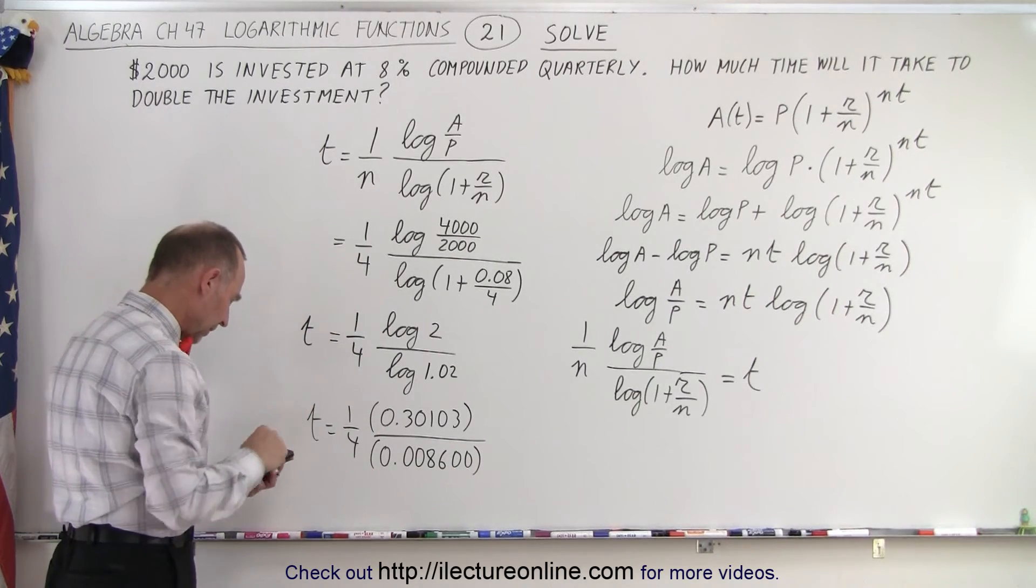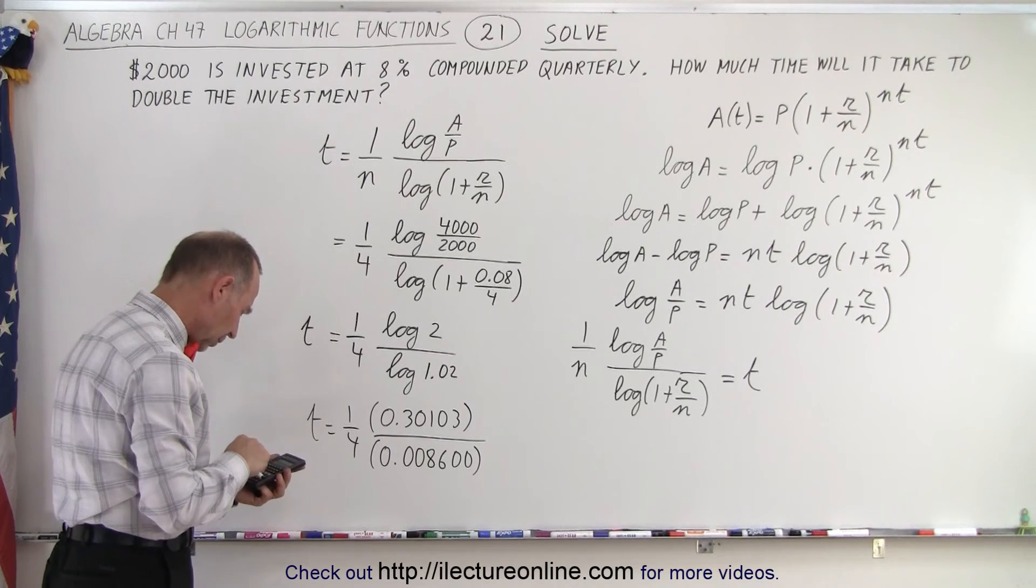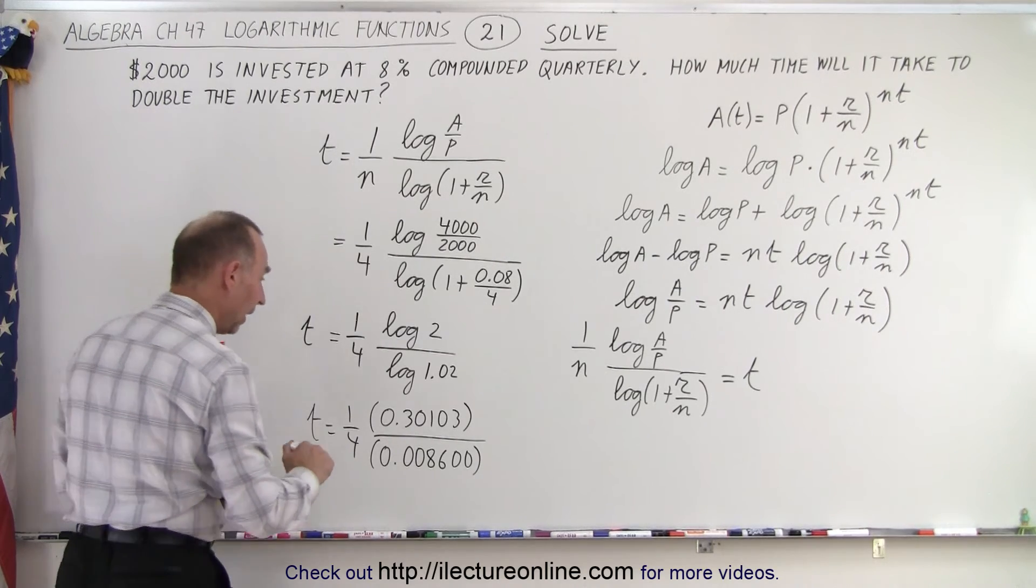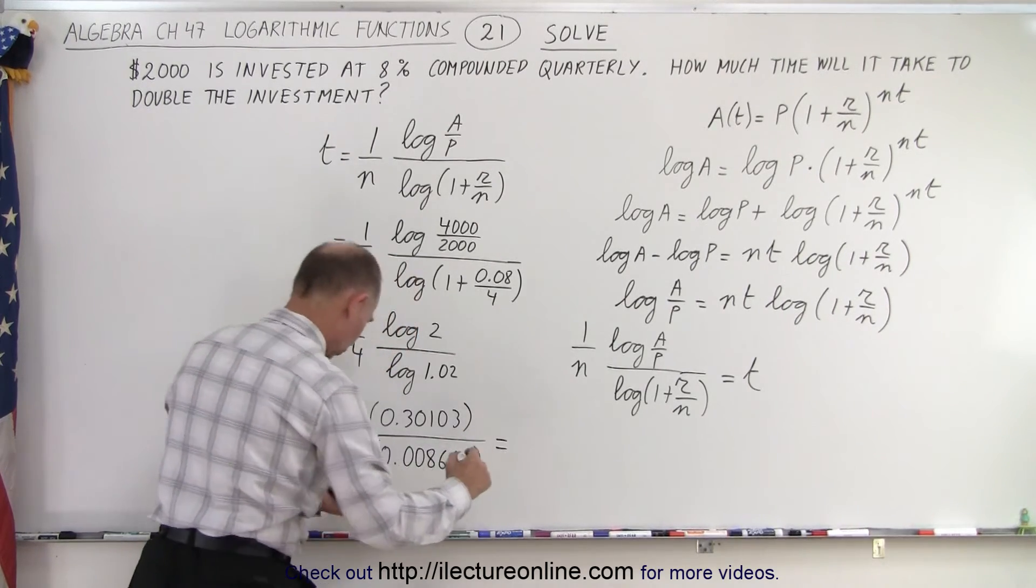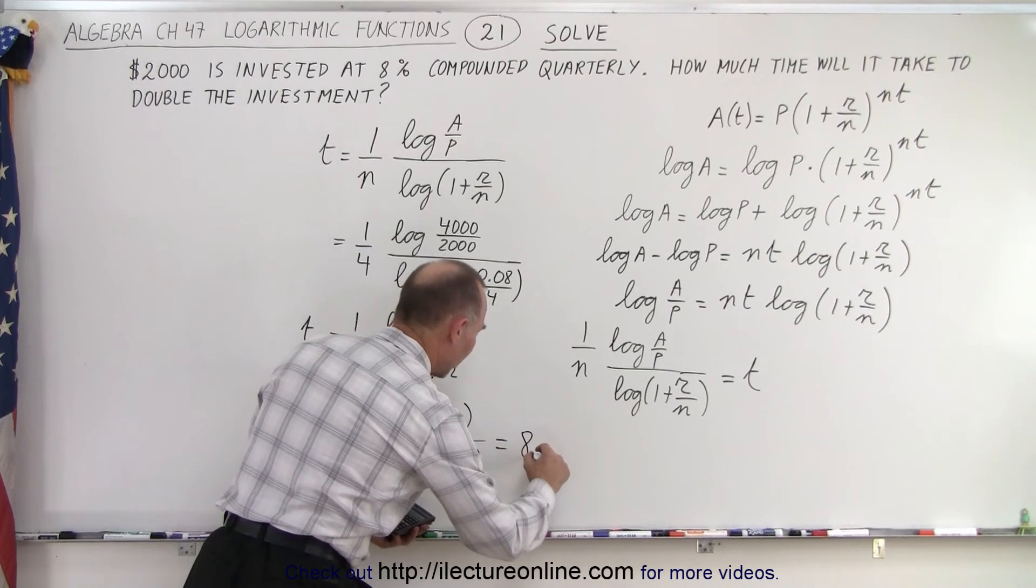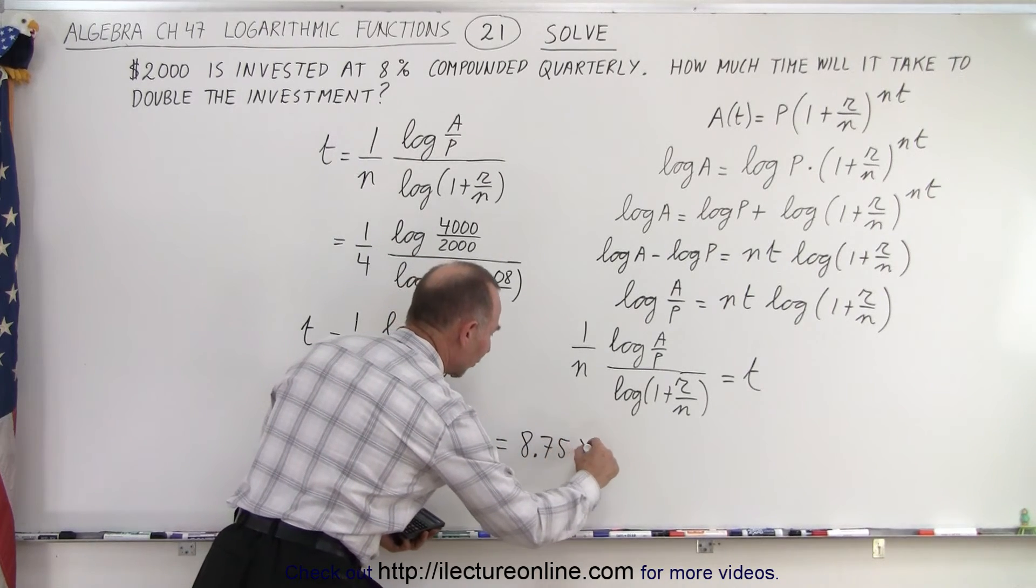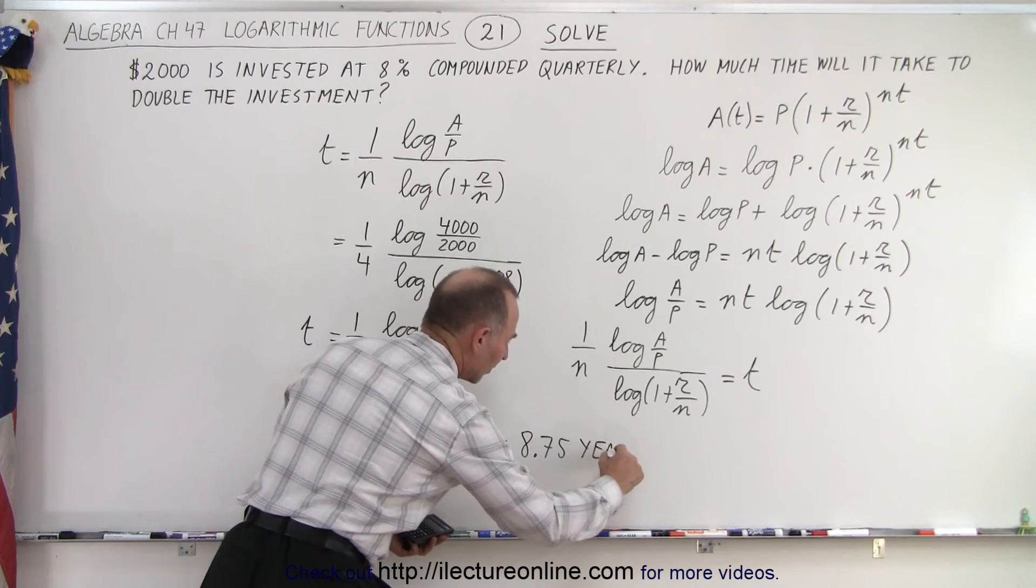And then we'll multiply that times one fourth, so divide by 4 equals, and we get this is equal to 8.75, and of course that would be in years. T is in years.